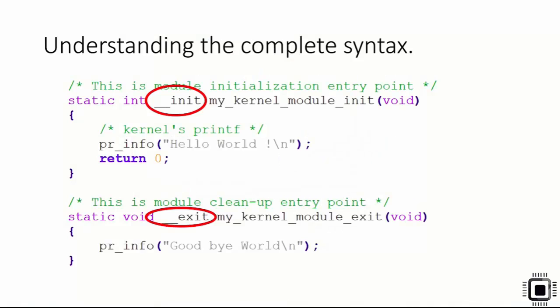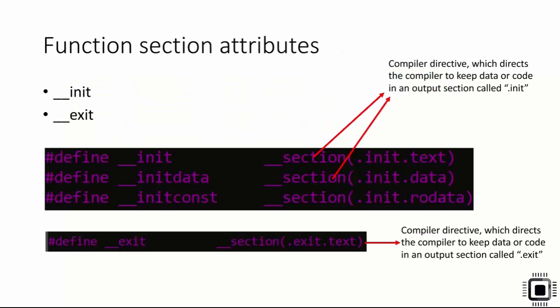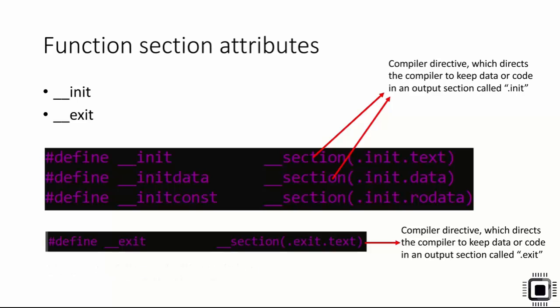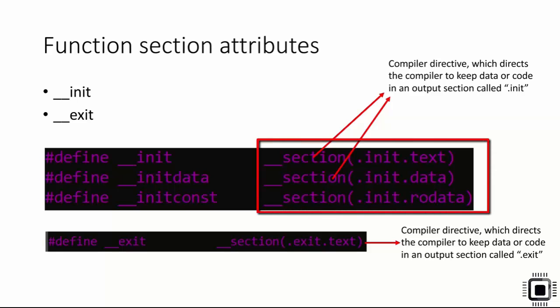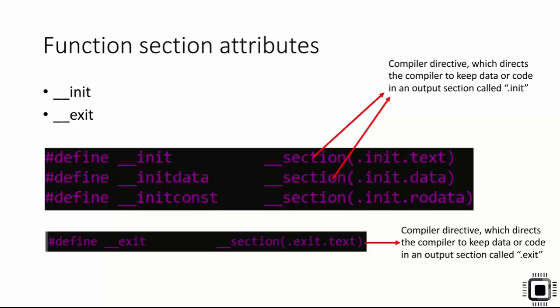In this lecture, let's explore init and exit macros. These are called function or variable section attributes — basically C macros defined in include/linux/init.h. You can open the init.h file and find these macros. They expand to something called compiler directives, also known as compiler attributes. For example, __init expands into __section(.init.text), which is a compiler directive that instructs the compiler to keep data or code in an output section called init.